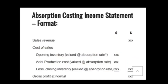For the absorption costing income statement, the format is: Sales Revenue, minus cost of sales at absorption rate — meaning variable plus fixed. This includes opening inventory at variable plus fixed cost, plus production cost at variable and fixed, minus closing inventory at variable and fixed. This gives cost of sales at absorption cost. Deducting cost of sales from sales revenue gives gross profit.